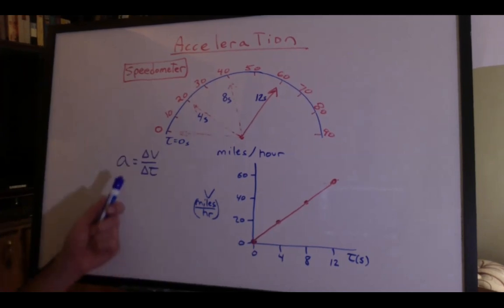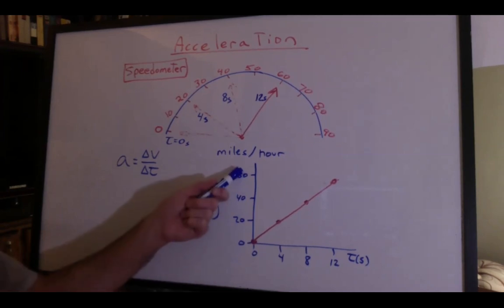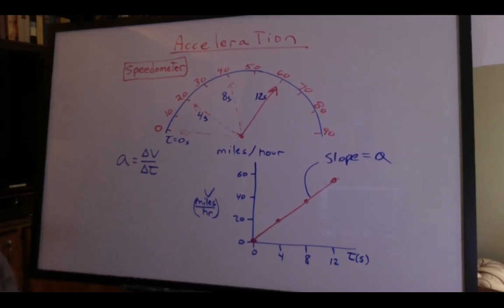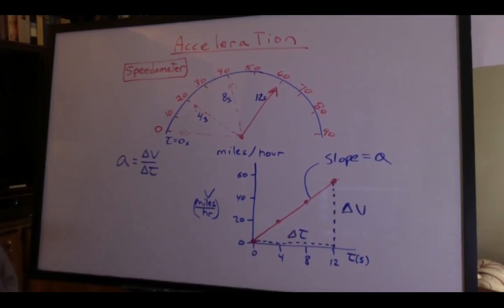Now, we said the acceleration was the change in velocity over the change in time. Velocity is on the y-axis. Time is on the x-axis. That means the slope is the acceleration. That's the change in velocity over change in time.